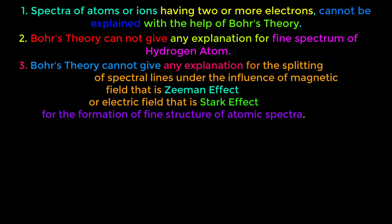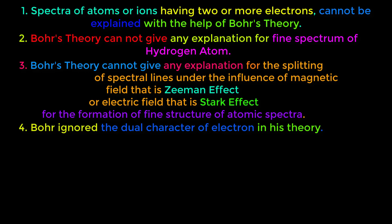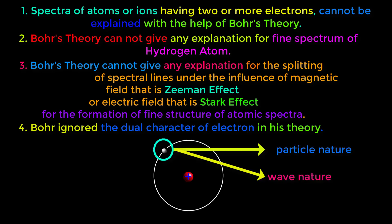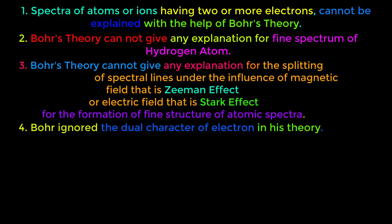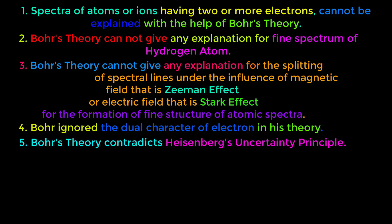The fourth limitation of Bohr's theory is that Bohr ignored the dual character of the electron in his theory. According to de Broglie, the electron has both particle and wave nature. But Bohr considered only the particle nature of the electron — he treated the electron only as a particle.